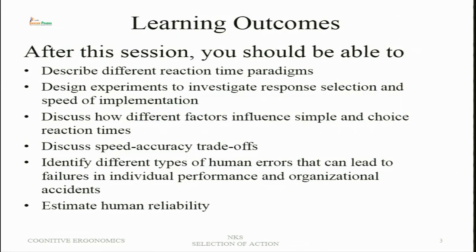Generally, whenever speeded performance is shown there will be some error committed, and there is a trade-off to be understood between speed and accuracy. Accuracy and error are complementary — as accuracy increases, errors decrease, and as speed of action increases, errors also increase. We will also estimate human reliability on the basis of system reliability.